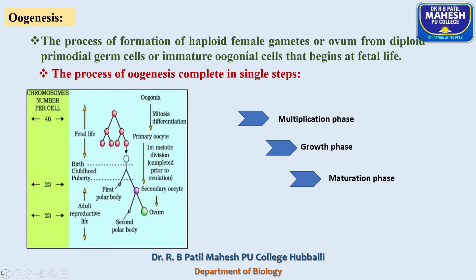The second contrasting difference: spermatogenesis completes in two steps — formation of spermatids and spermatogenesis — whereas oogenesis completes in a single step which includes three phases: multiplication phase, growth phase, and maturation phase. The multiplication phase is restricted to fetal life.